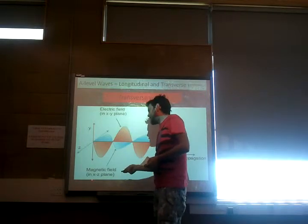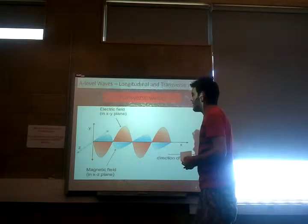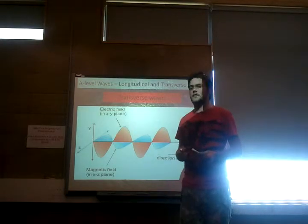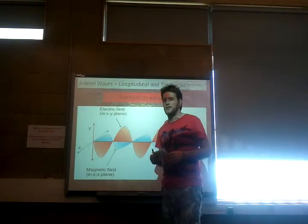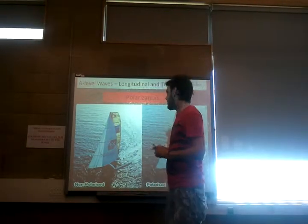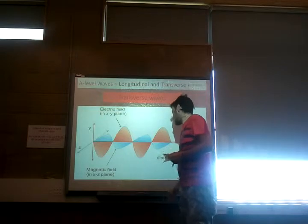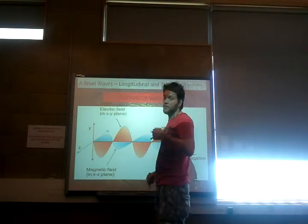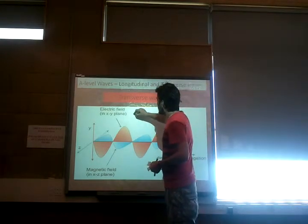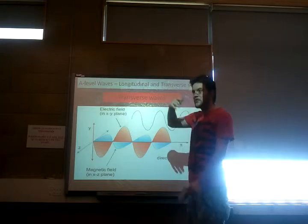Not all transverse waves are involved in the electromagnetic spectrum, but the electromagnetic spectrum is the main one to be concerned with. That brings us to polarization. When we talk about transverse waves - and we'll concentrate on light for now - when we get a transverse wave, we tend to think it's simple, just traveling up and down on its own straight path. But that's not actually right.